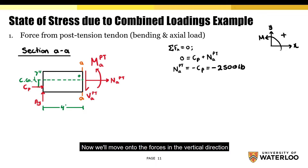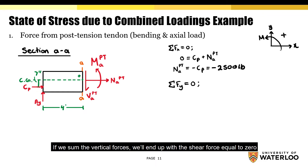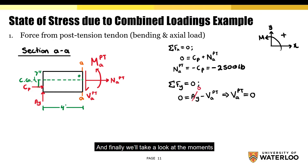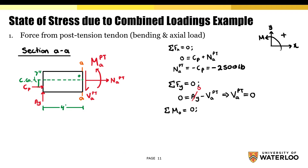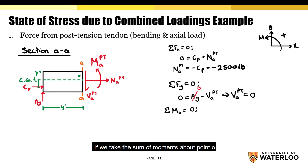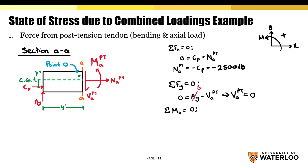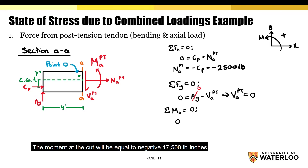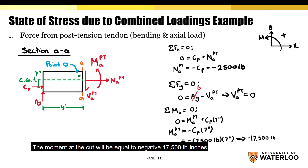Moving on to the forces along the vertical direction: summing the vertical forces, the shear force equals zero. Finally, taking the sum of moments about point O, the moment at the cut equals negative 17,500 pound-inches.